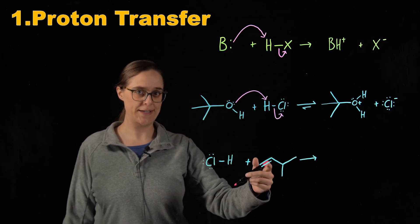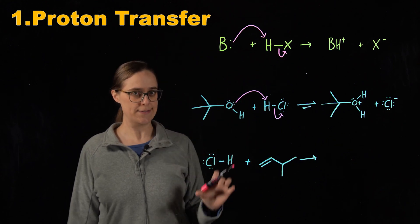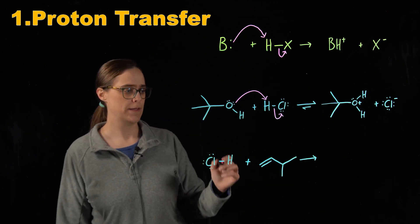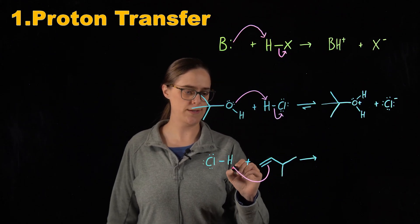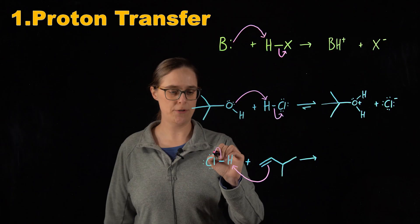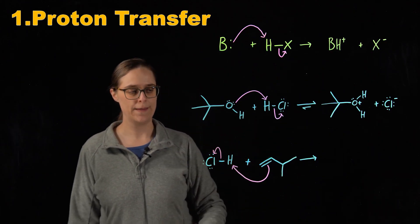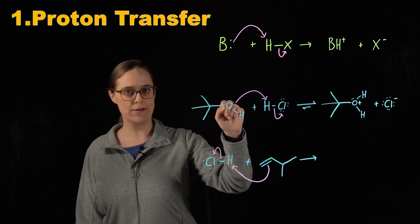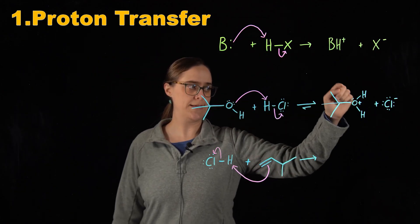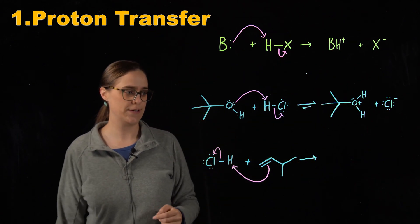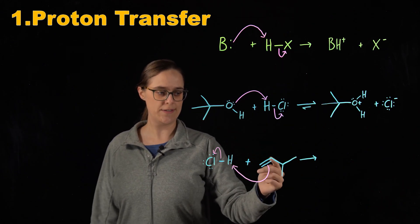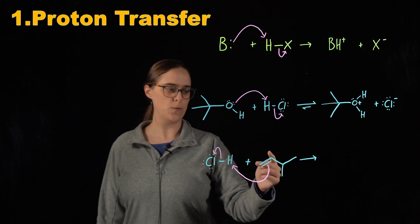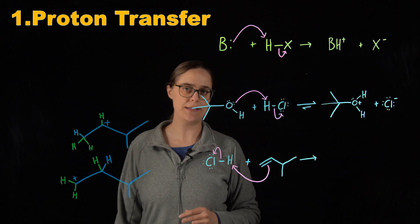In this second example, electrons initiating the attack are coming from a multiple bond, which creates an extra layer of complexity when predicting the products. Electrons from a multiple bond can attack the acidic hydrogen, and hydrogen's other bond breaks. In our previous example, the lone pair that initiated the attack was entirely on that oxygen, and that oxygen gained the hydrogen and the positive charge. Here, the electrons initiating the attack are shared between two different atoms. One atom is going to gain the hydrogen, and the other is going to gain the positive charge.